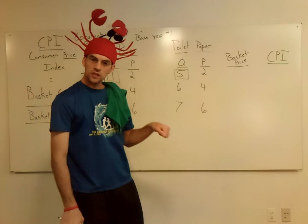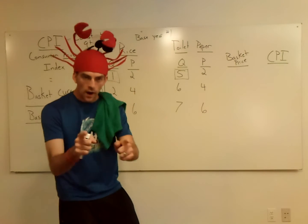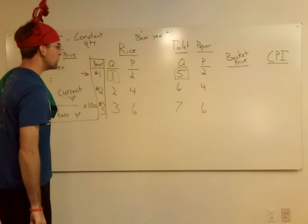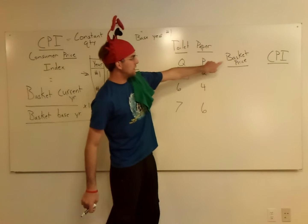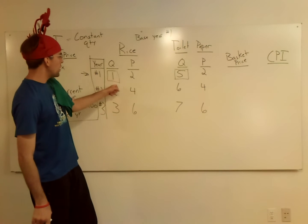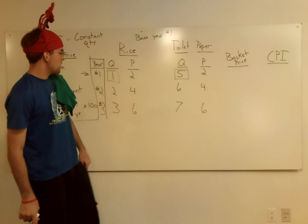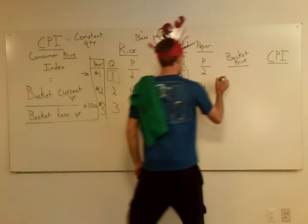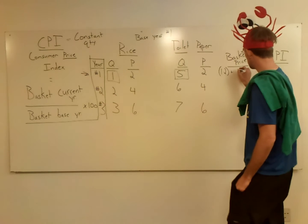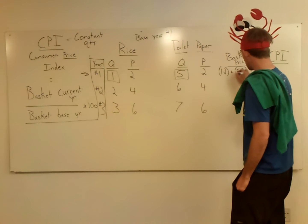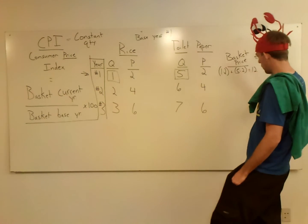Over time this should change, but for CPI we keep it constant so that we can see what happens to the price. So what we have to do first, we've got to figure out how much the basket is going to cost — one piece of rice and five pieces of toilet paper. For the first year, we're going to do one times two plus five times two, and we get two plus ten, which is twelve.